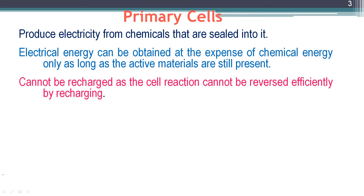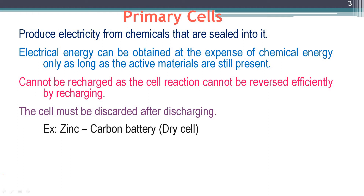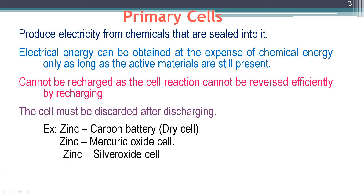Examples of primary cells include the zinc carbon battery (commonly called the dry cell), the Leclanché cell, zinc mercury oxide cells, and zinc silver oxide cells. A primary cell is a non-rechargeable battery and must be discarded after discharging.